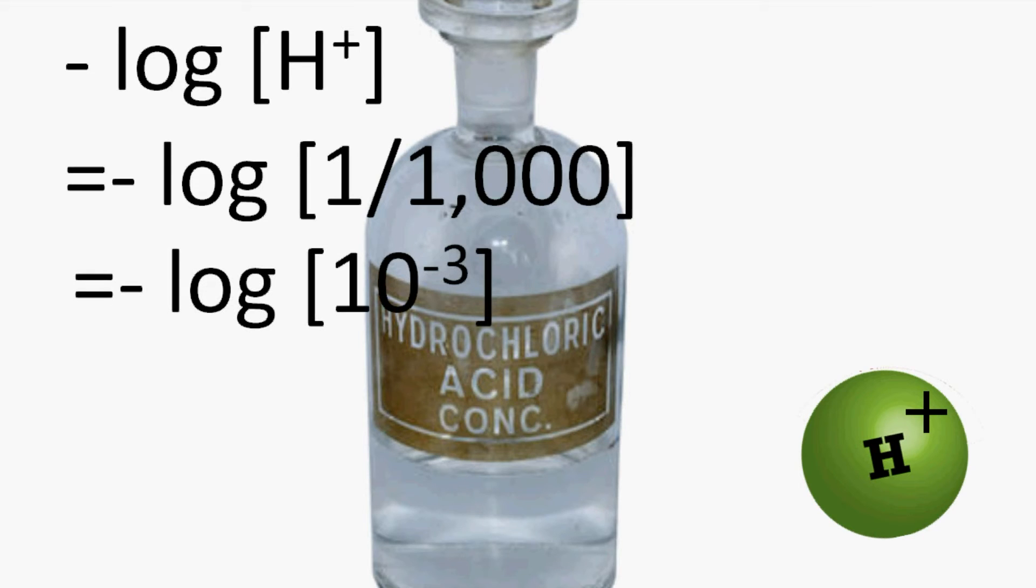1000 means 10 cube, so minus log 1 by 10 cube. 1 by 10 cube means 10 to the power minus 3. This minus 3 comes here, minus and minus becomes plus, so 3 log 10. And log 10 is equal to 1, pH is 3. So when we add acid, the concentration of hydrogen increases and the pH decreases.